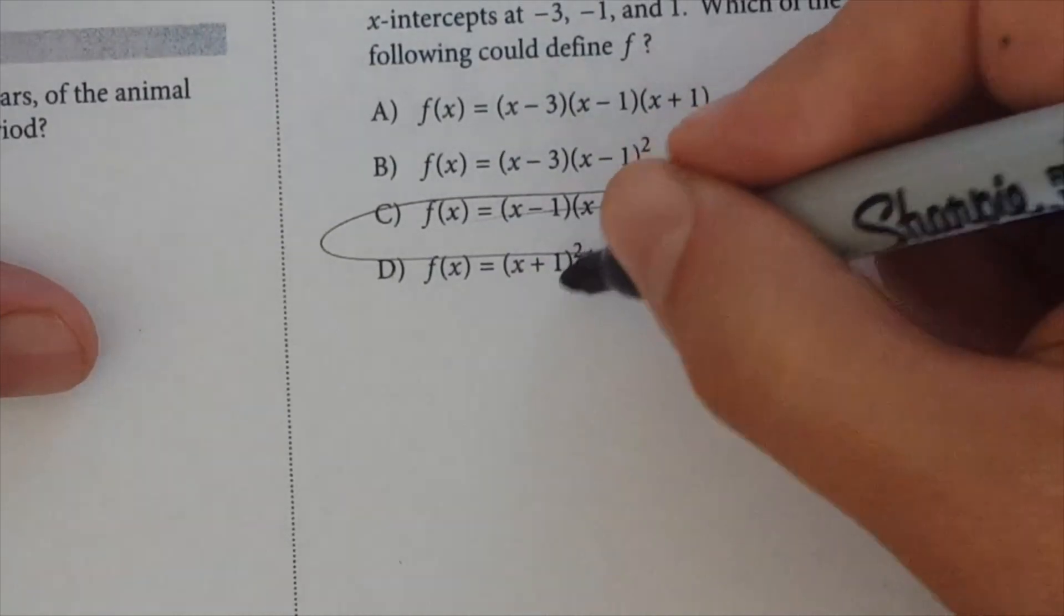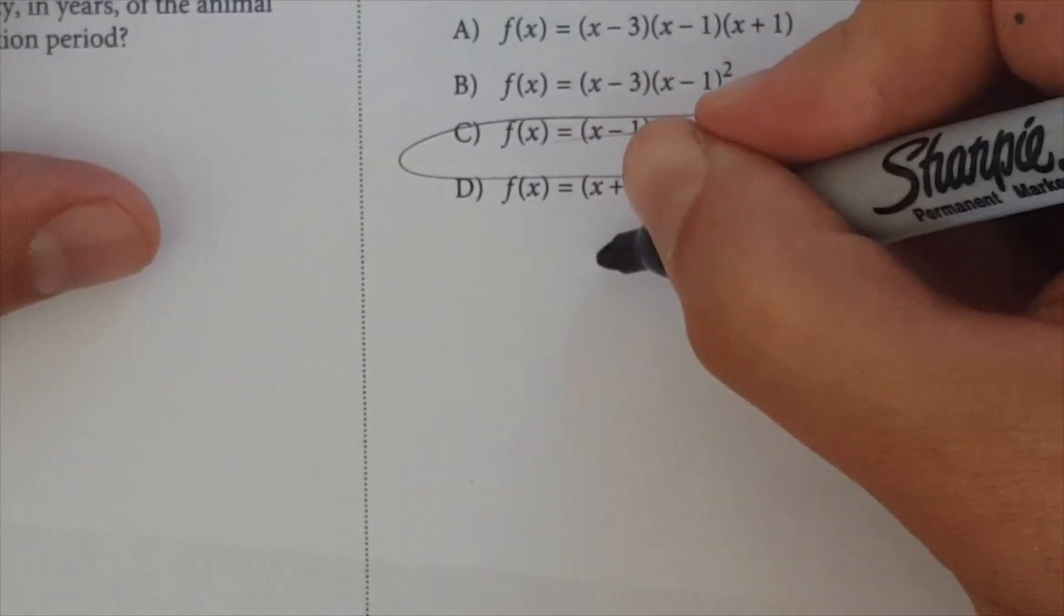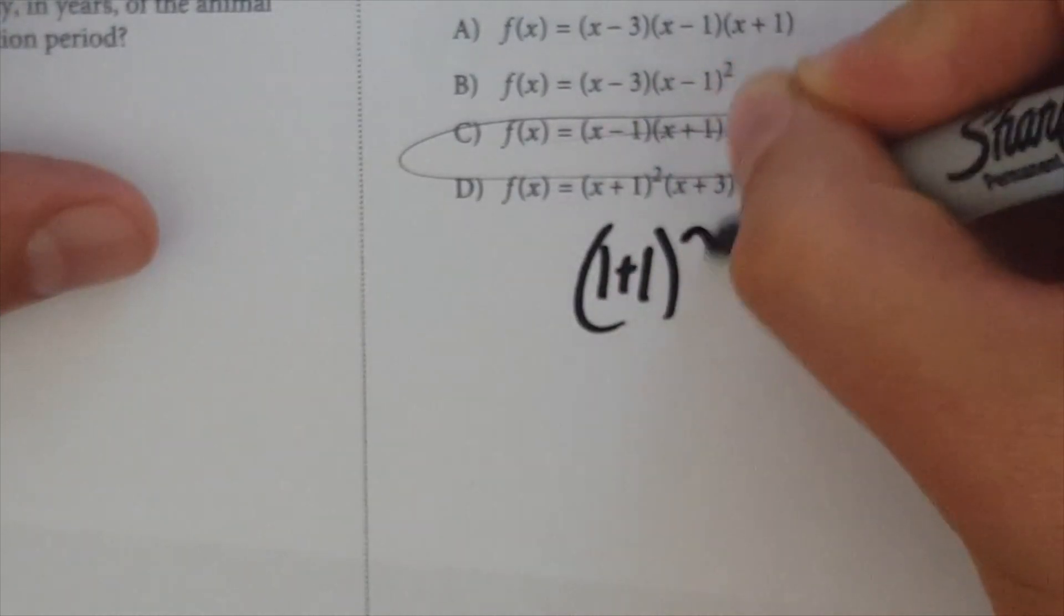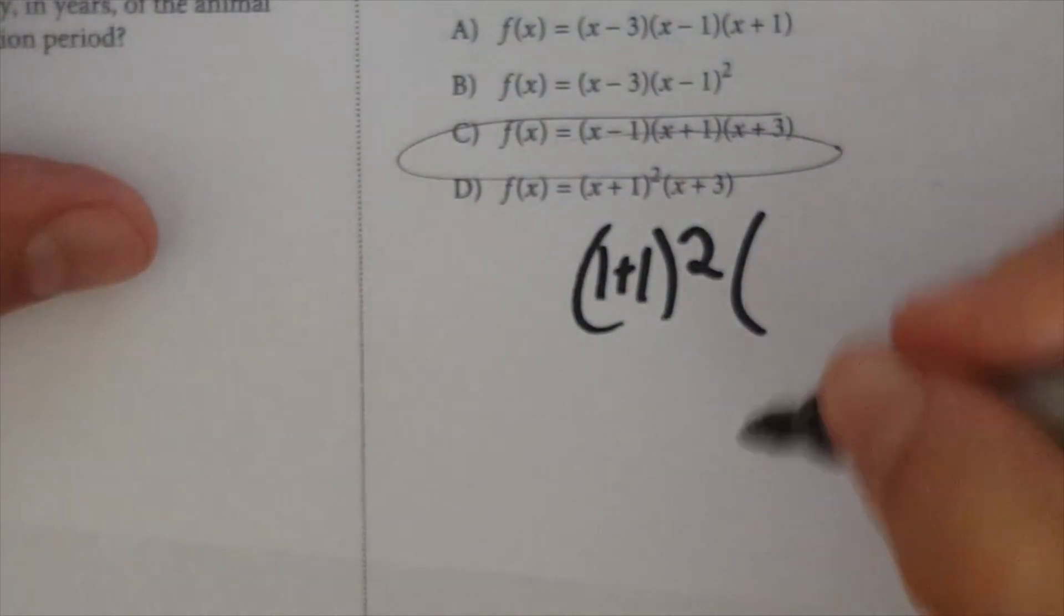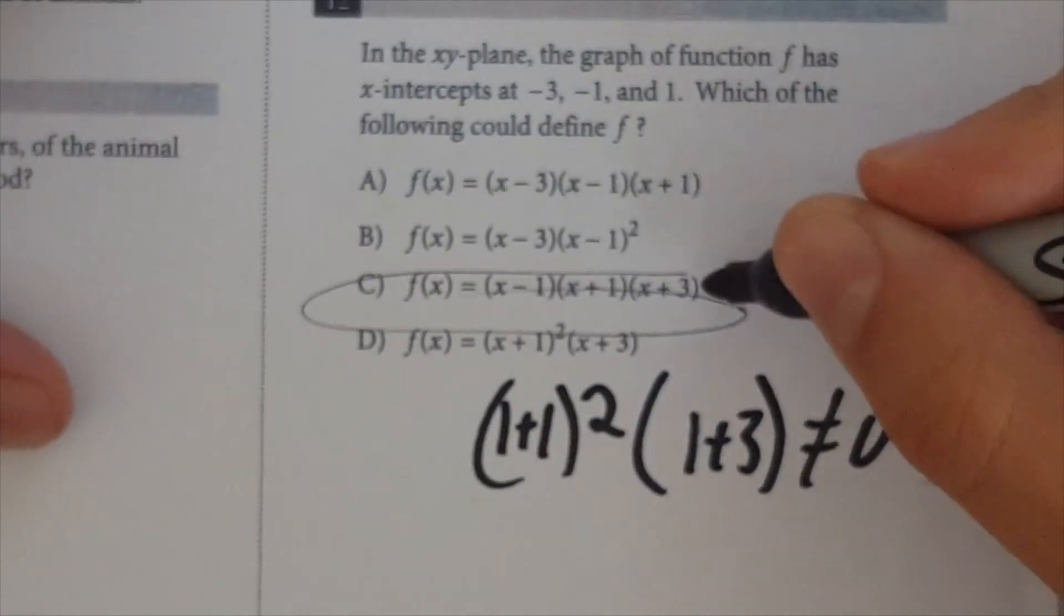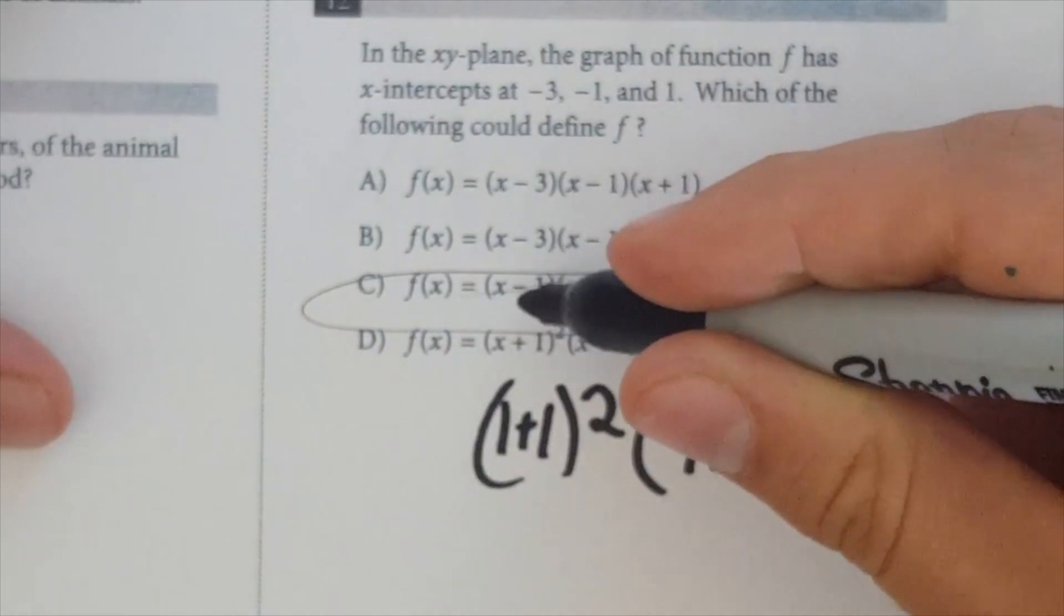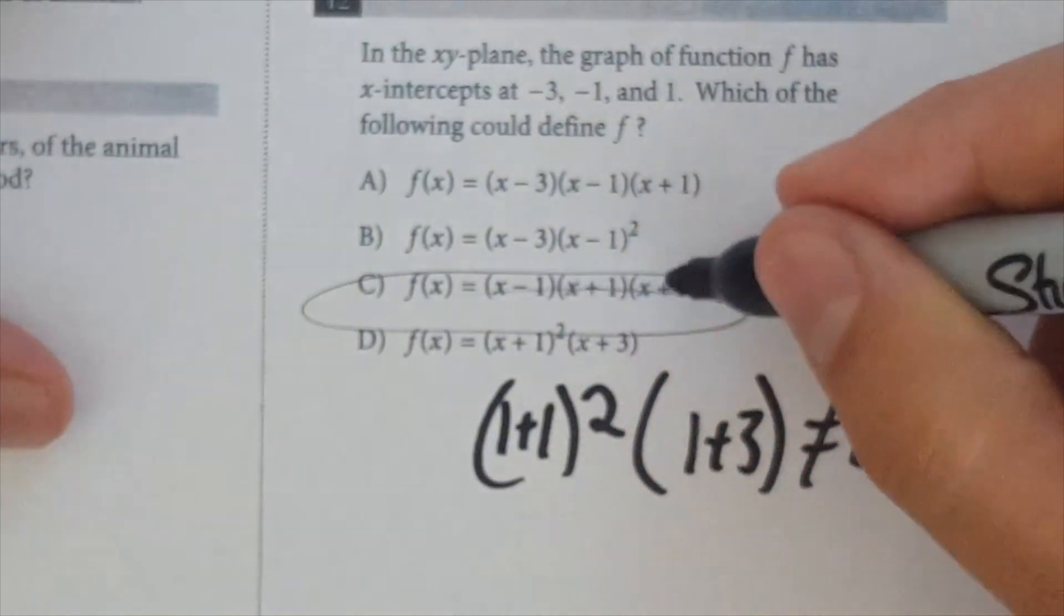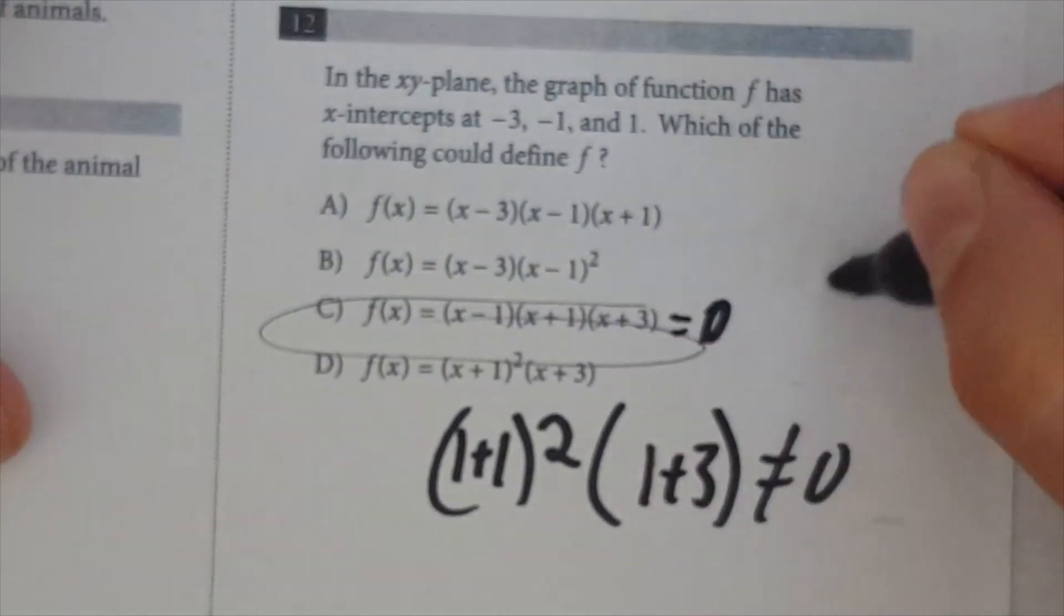But now if you plugged in plus 1 to f of x, right, for D, you're going to get 1 plus 1 squared times 1 plus 3, which is not equal to 0. But if you plugged in here, this 1, so plus 1 minus 1 is 0, times, 0 times anything is 0. So that's going to be 0. So the answer is C.